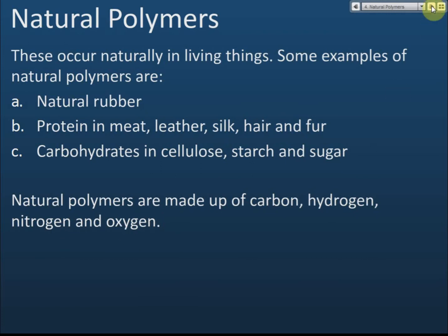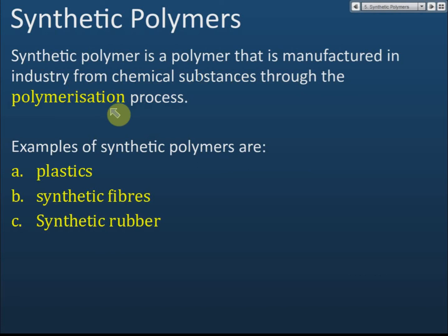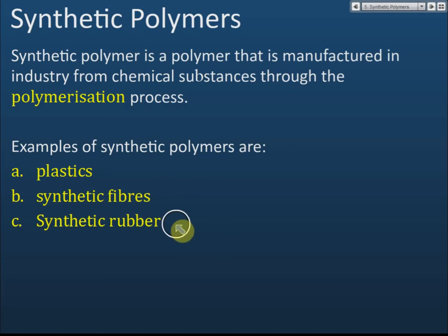In this chapter, we will focus only on synthetic polymers. Synthetic polymers are polymers manufactured in industry from chemical substances through the polymerization process. Examples of synthetic polymers are plastics, synthetic fibers, and synthetic rubber.